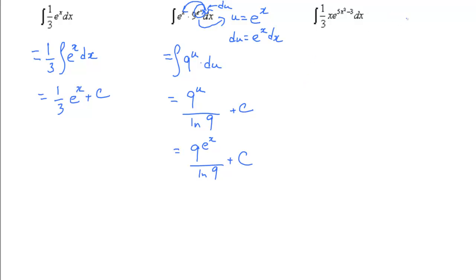This last example, we're going to say u is the exponent, 5x squared minus 3. The derivative is 10x dx. We don't have 10x dx, we have a third x dx. So we're going to divide by 10, keep the x dx.